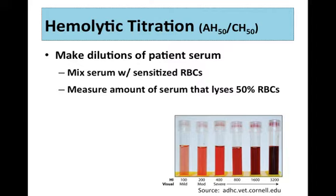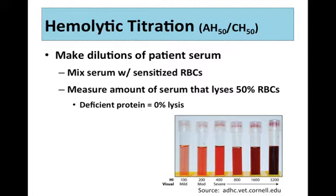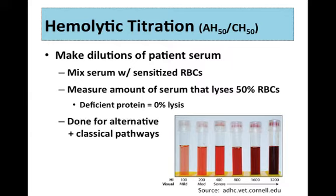This helps look at overly active complement systems. If a very weak dilution is still capable of lysing 50% of the red cells, that indicates highly concentrated or very active complement in the serum. If you have a deficient protein in your complement cascade, you won't see any lysis at all because it won't be initiated. You can do this for both the alternative and classical cascades, though the red cells and reagents differ since the two pathways have different triggers.